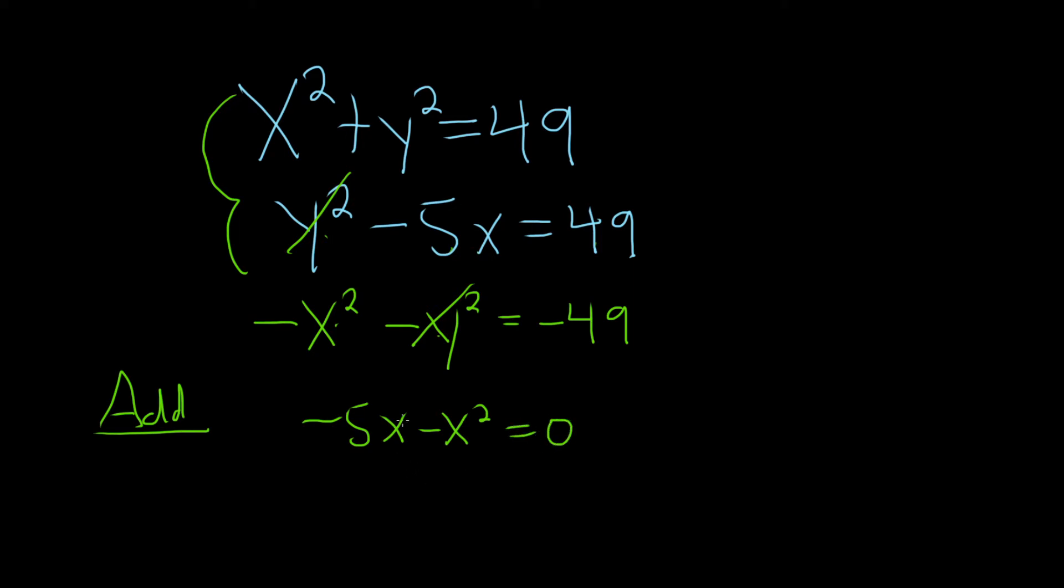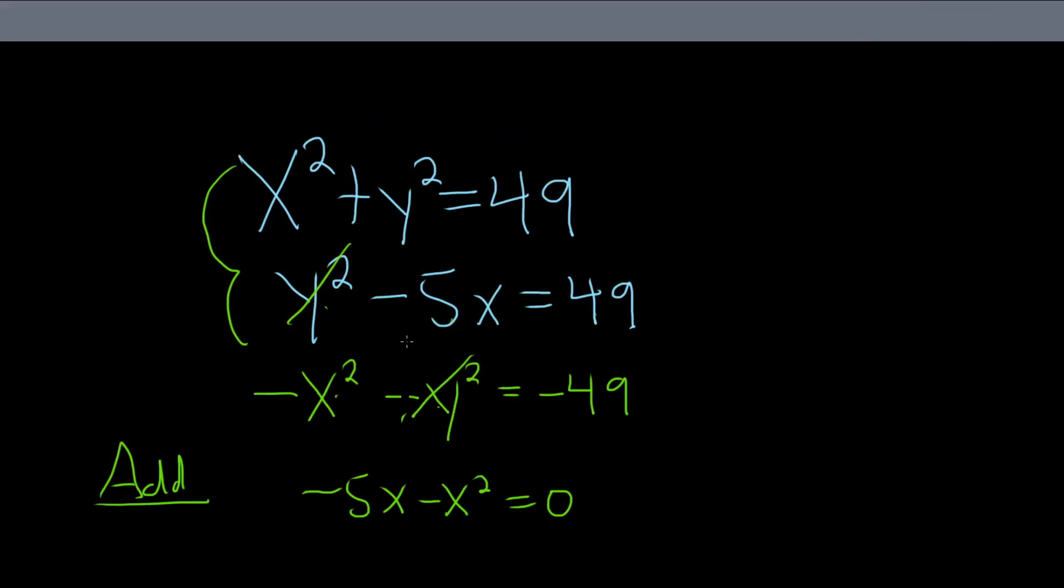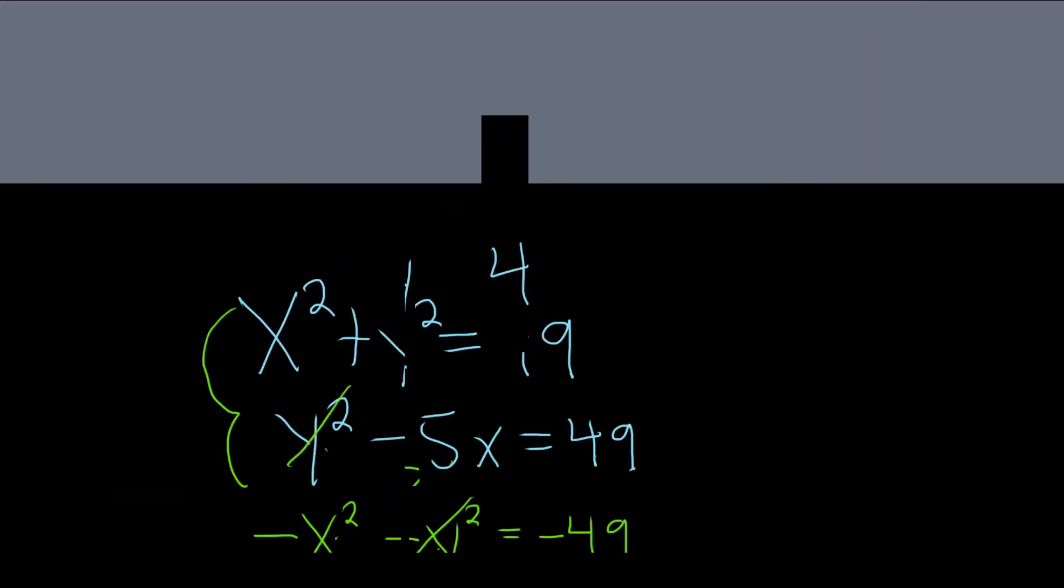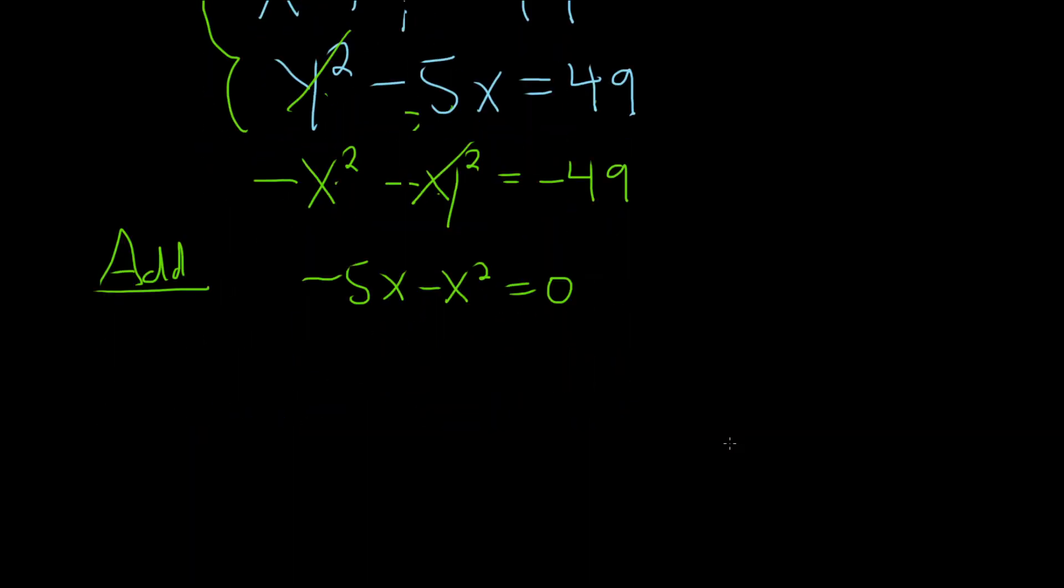This is pretty nice. Let's go ahead and just to make it simple, let's divide everything by negative 1. So we have 5x plus x squared equals 0. We can do that just by dividing each piece by negative 1. And let's write it like this, just because it looks better. x squared plus 5x equals 0.